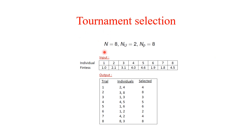For example, with a population size of 8 and a tournament size of 2: given the 8 individuals and their fitness values, we randomly select individuals 2 and 4. Between them, individual 4 is selected because it has the higher fitness value. Another tournament might be between individuals 3 and 8. We perform 8 such trials to select 8 individuals for the next generation.